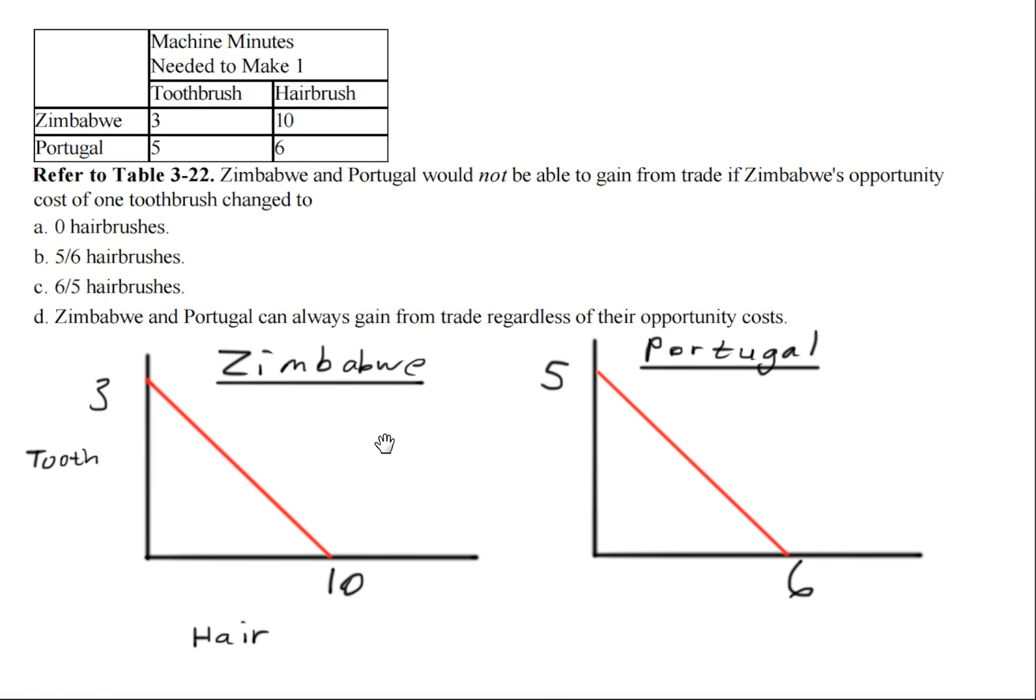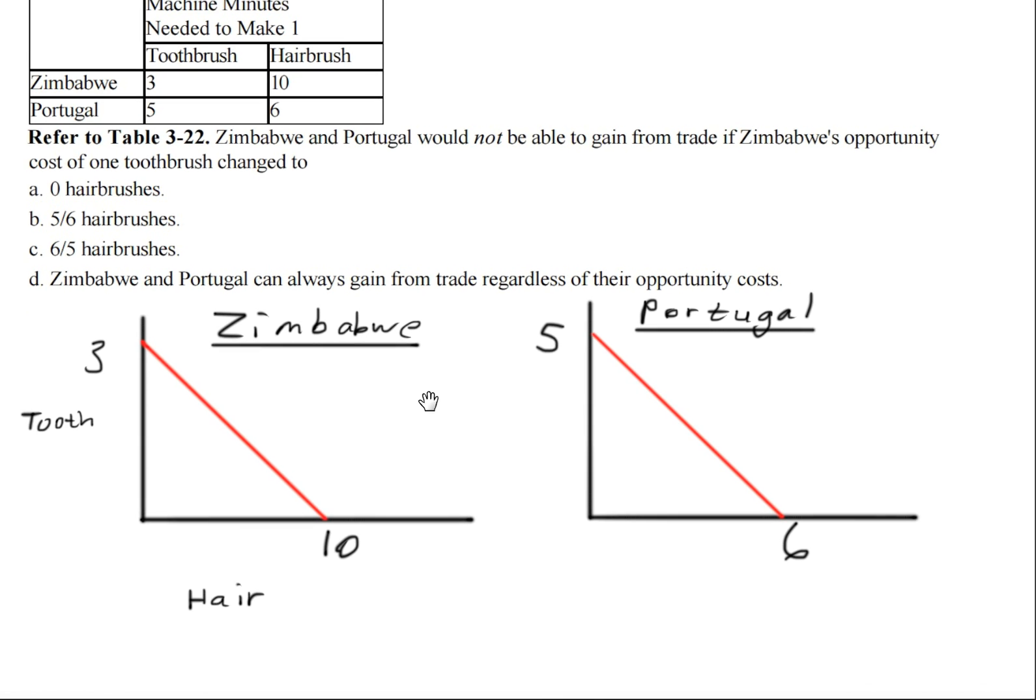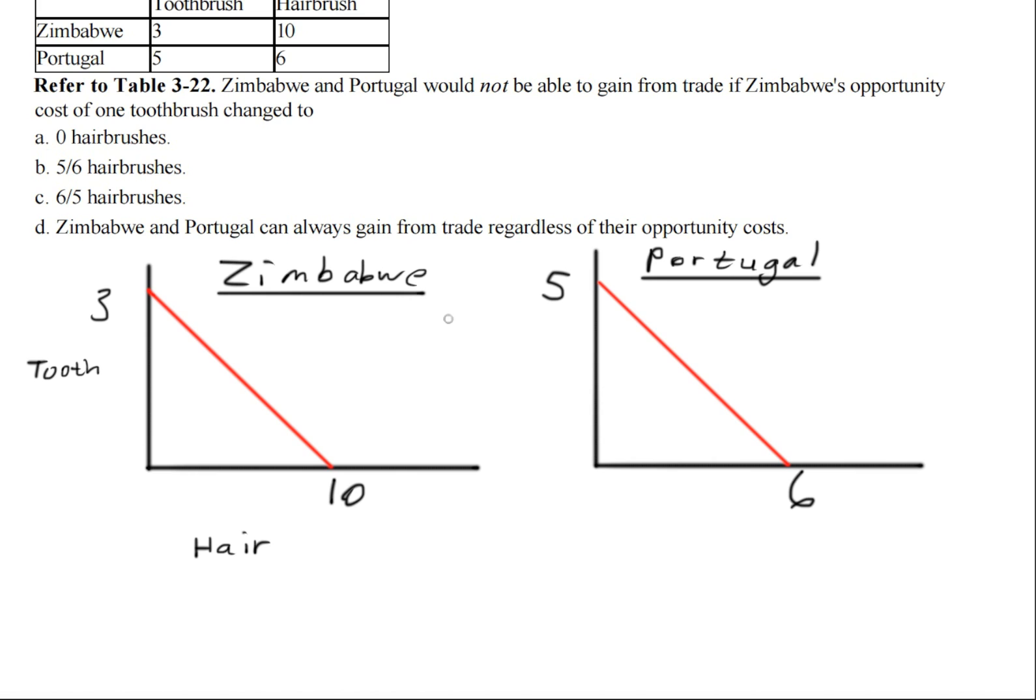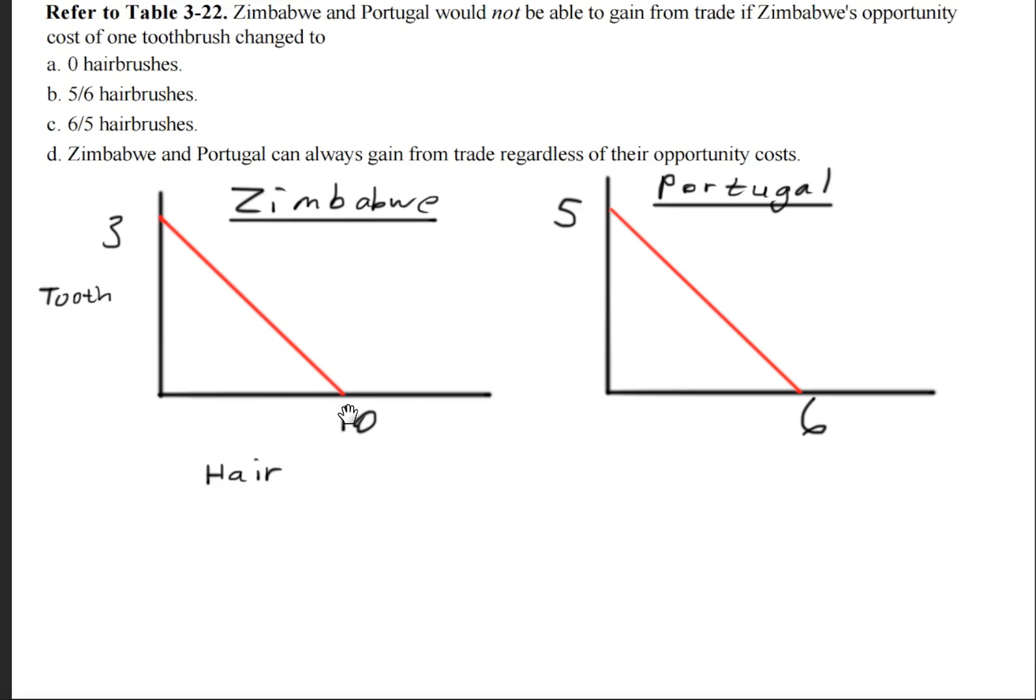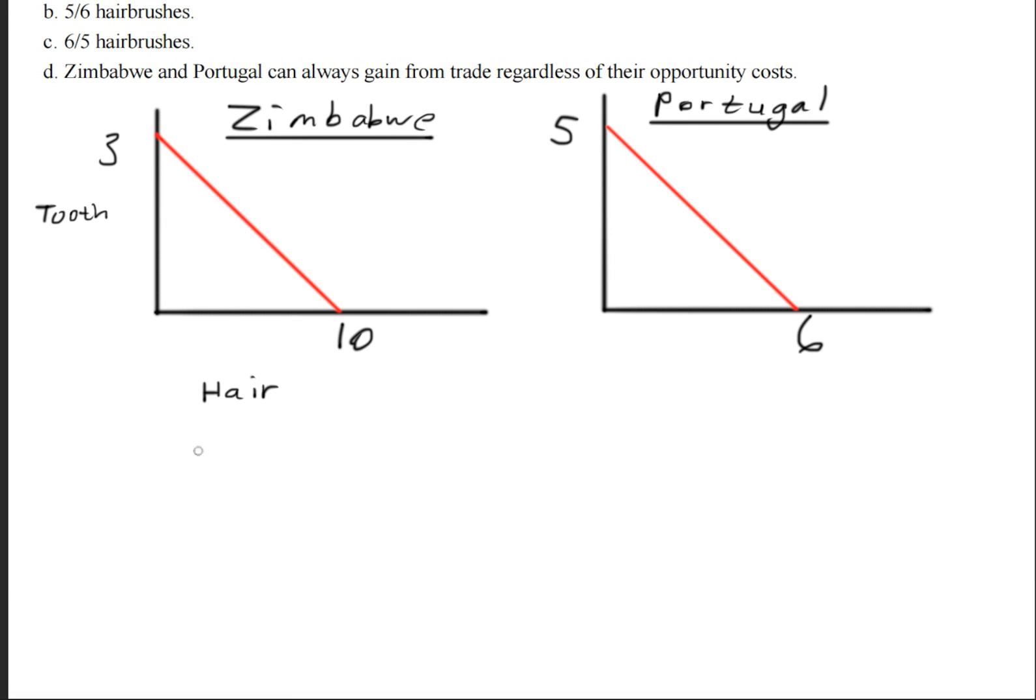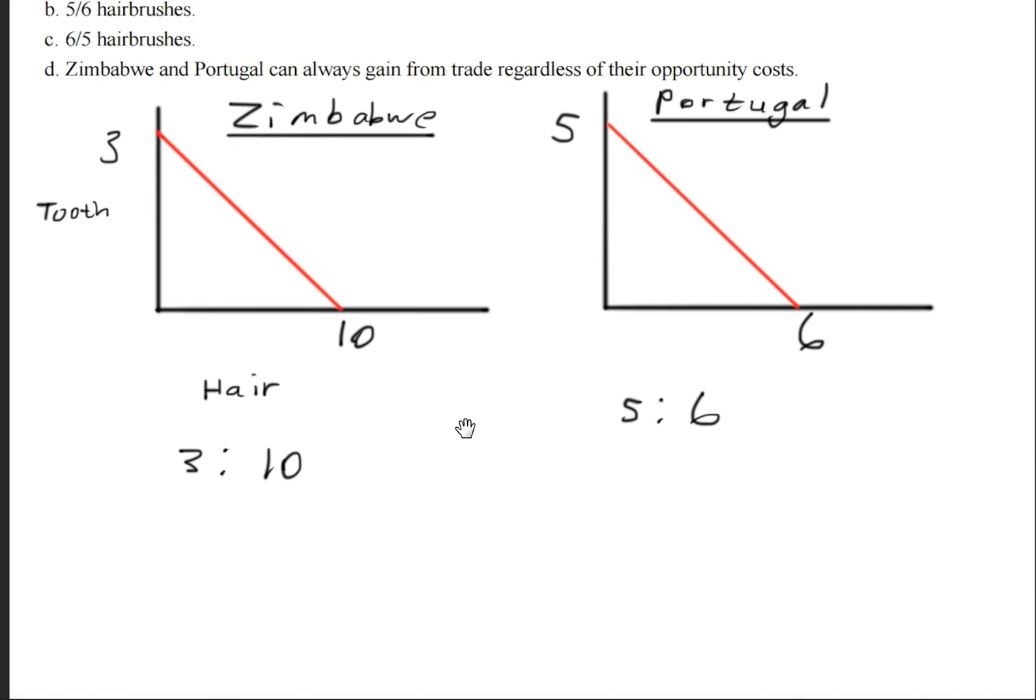The next step to do is to figure out who has the comparative advantage over which commodity. And the way we do that is by setting up two ratios. The first would be, for every three toothbrushes, we have ten hairbrushes. Over here, we would have five toothbrushes for every six hairbrushes.